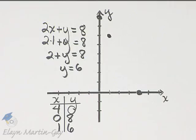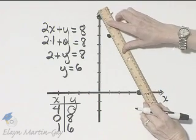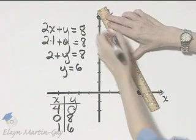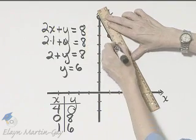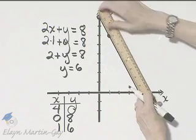Notice these three do lie along the same straight line, and the line through them is the graph of 2x plus y is equal to 8.